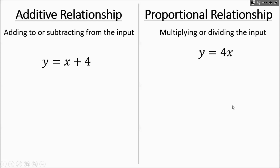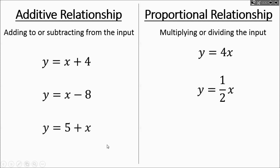You could have two unknowns where you're subtracting 8 from the input, or taking one-half times x as the input. It's the same concept — you're adding something or subtracting something from the x value. You could also have dividing the input by a number.